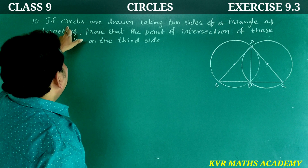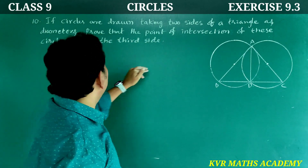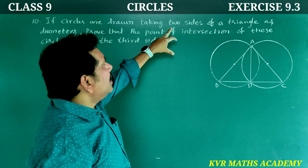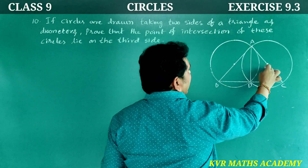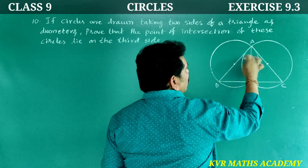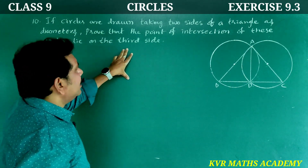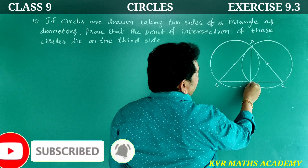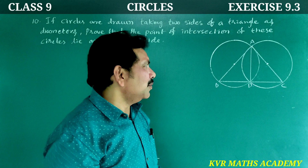Next, tenth question: If circles are drawn taking two sides of a triangle as diameters, prove that the point of intersection of these circles lies on the third side. In triangle ABC, two sides are taken as diameters. We need to prove that their point of intersection D lies on the third side.